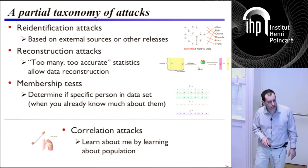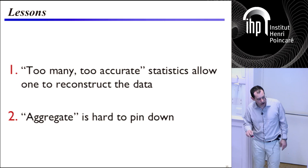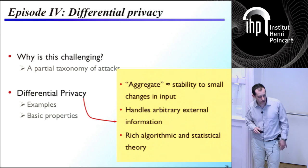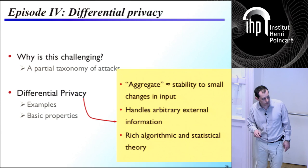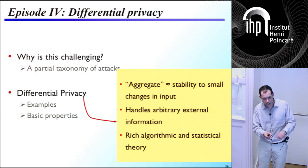So we saw re-identification attacks, reconstruction attacks, membership tests, and correlation attacks. The lessons we've learned: too many, too accurate statistics allow one to reconstruct the data, and the notion of 'aggregate' is very hard to pin down. In the second 50 minutes, we'll look at a specific concept called differential privacy — we'll see some examples and basic properties, and then get into algorithms that satisfy this notion and come up against the bounds we were talking about. Let's take a break.